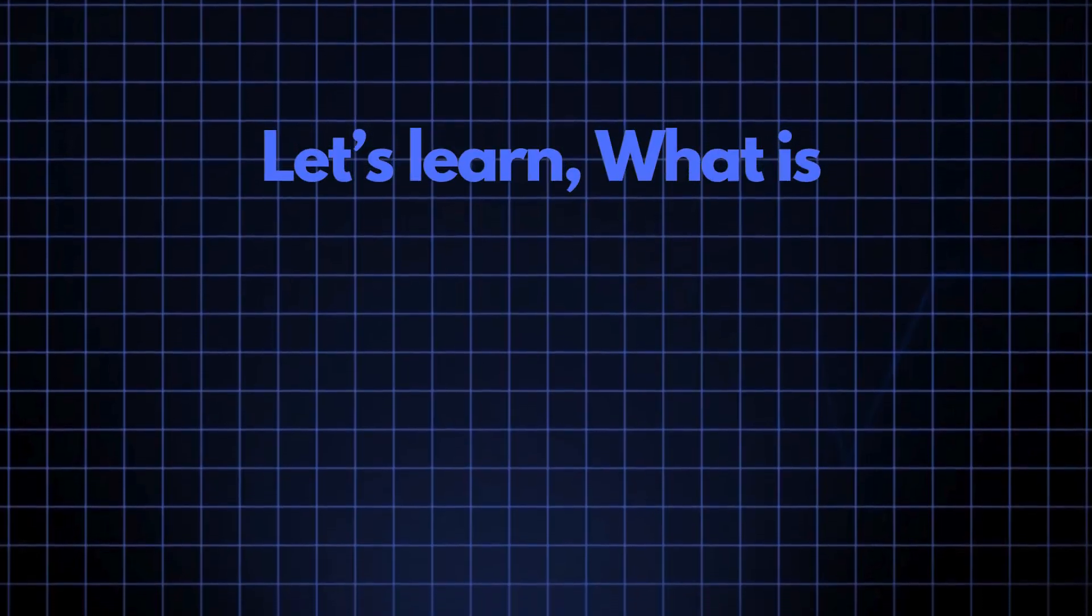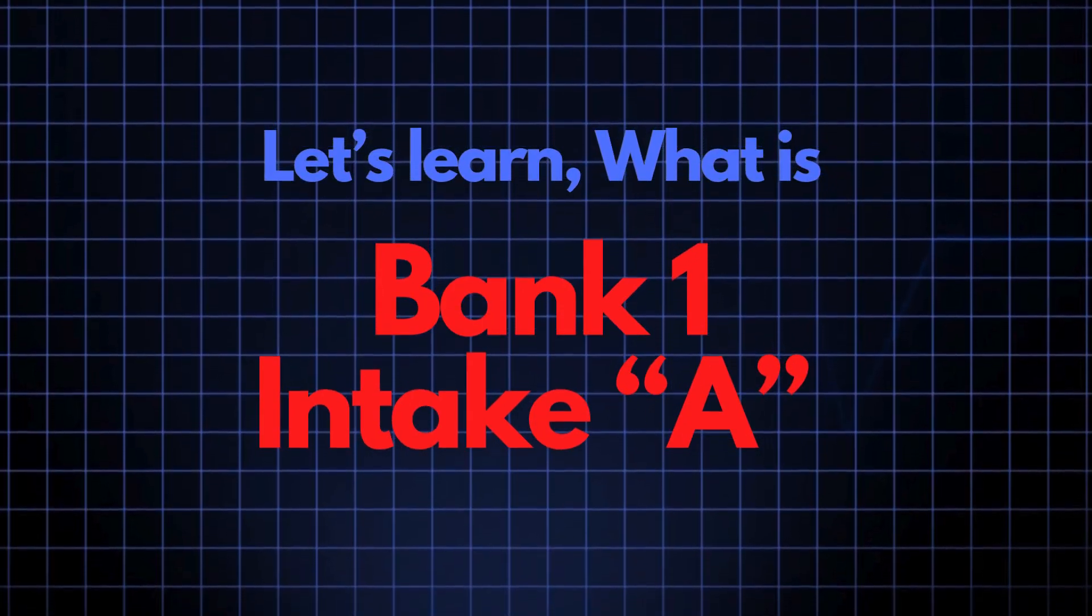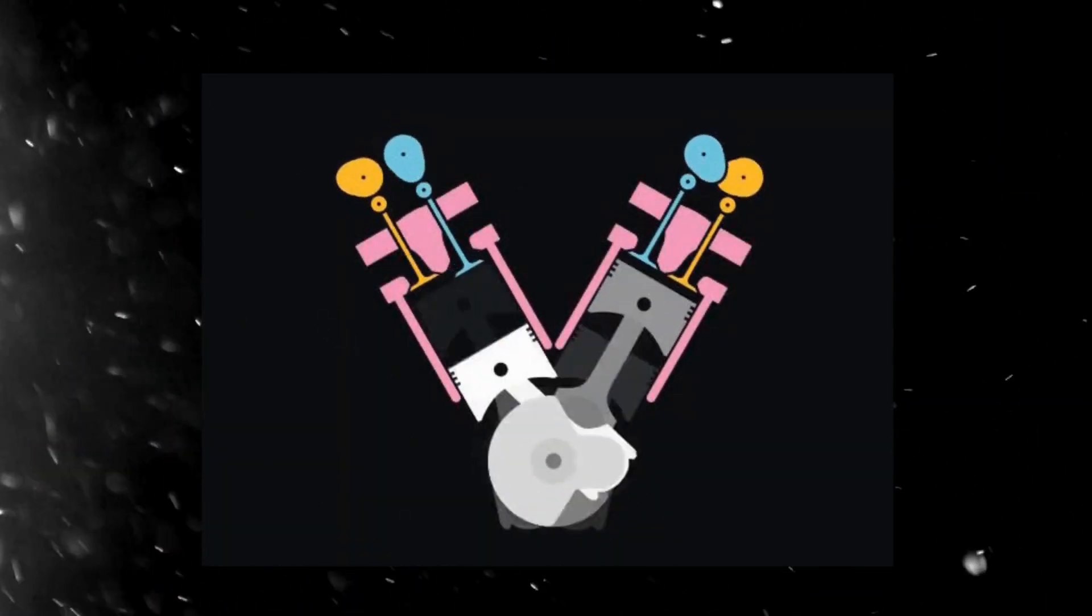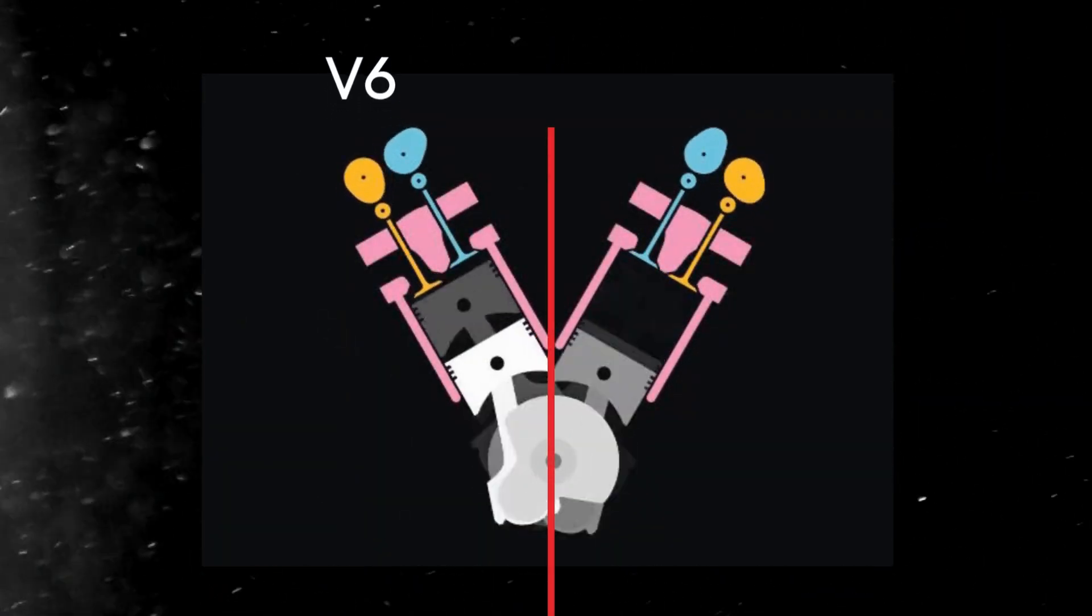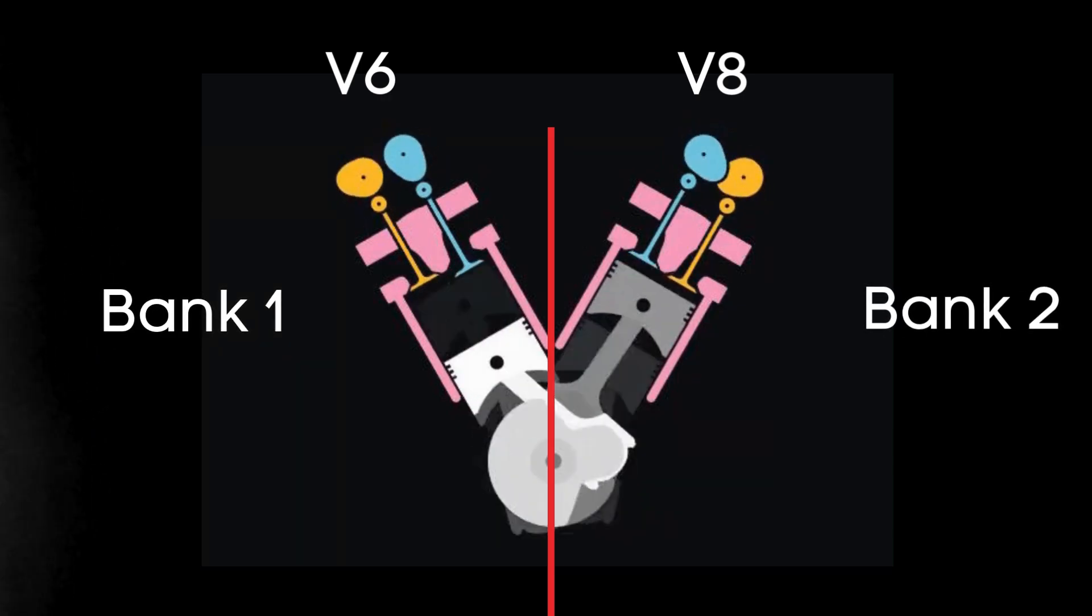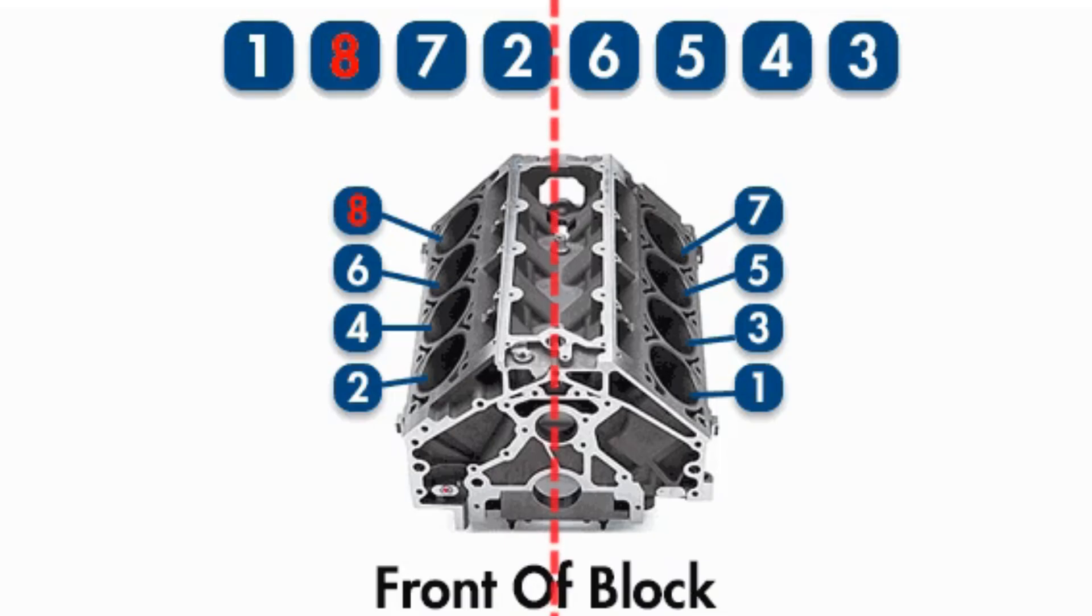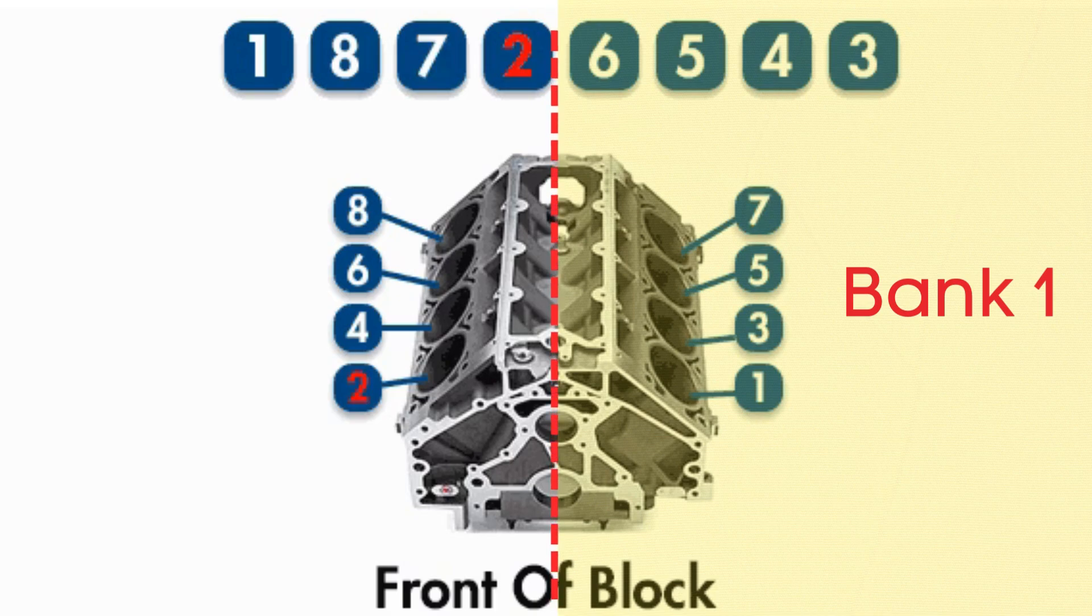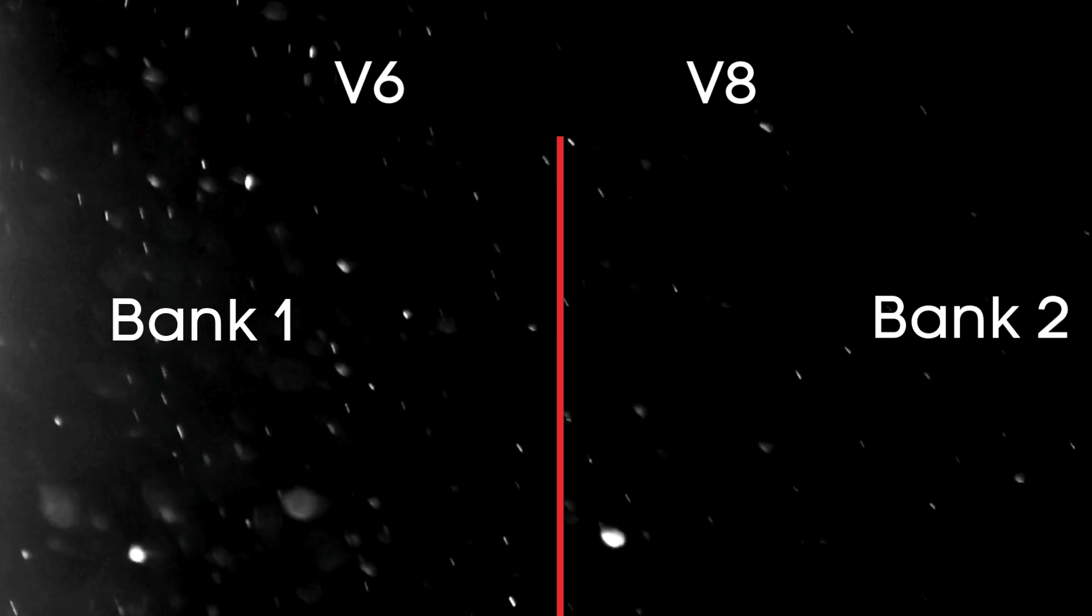Now, let's break down what the bank 1 intake camshaft actually is. In engines with multiple cylinder banks like V6 or V8 engines, you'll have two sides, or banks, of cylinders. Bank 1 typically refers to the side of the engine where cylinder 1 is located, and bank 2 is on the opposite side.